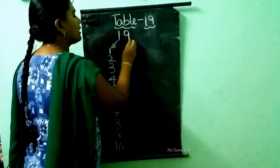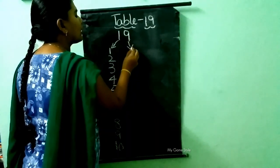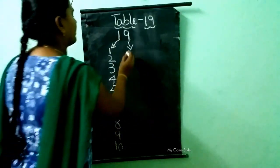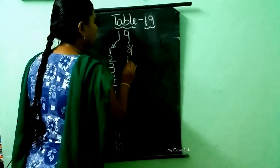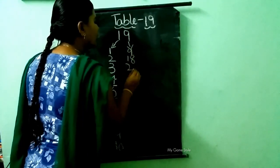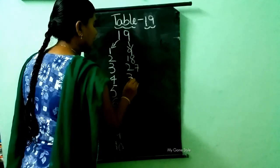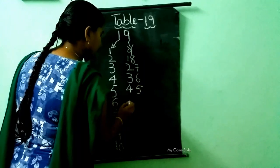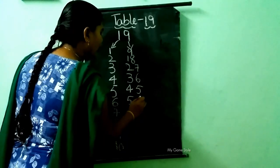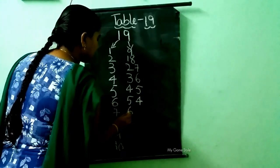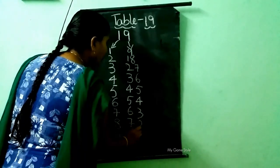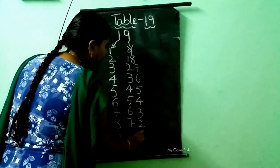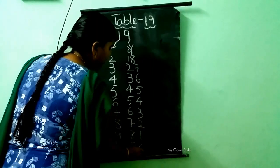Here this is the 9 number. So we need to write here the 9 table, children. 9, then 18, 27, 36, 45, 54, then 63, 72, 81, and 90.